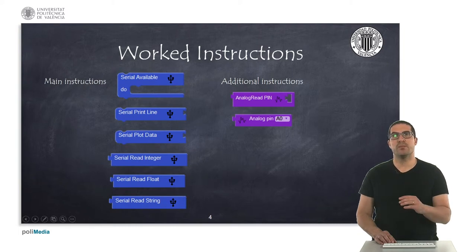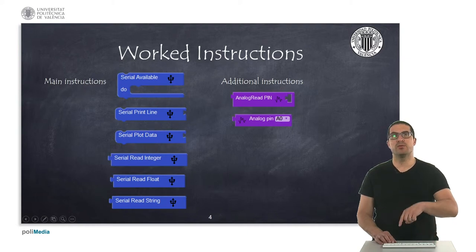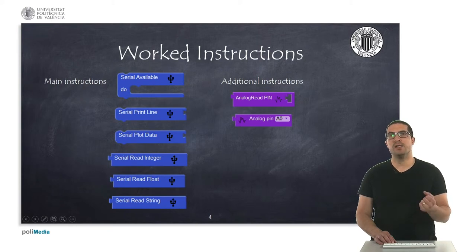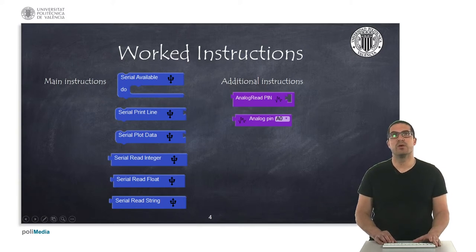We also have the possibility to plot graphs. We simply need to use this serial plot data instruction. We also have the possibility to read whatever the user inputs as an integer, as a decimal number or float, or also as a string, just as text. Additionally, we will use these instructions for the exercises we will see.